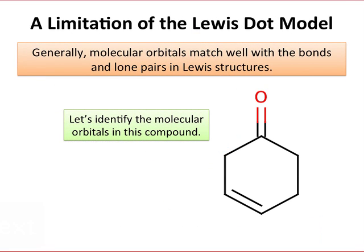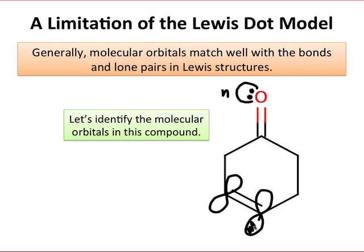Generally, we can map molecular orbitals fairly well onto the common structures in Lewis structures, including single bonds, double and triple bonds, and lone pairs. For instance, a lone pair, which is a filled orbital, is typically represented by an n-molecular orbital. A double bond and triple bond are typically represented as pi-molecular orbitals with side-on overlap of p orbitals residing on either sp or sp2 hybridized atoms. And sigma bonds or single bonds are represented by sigma-type overlap and sigma-bonding and sigma-star antibonding orbitals.